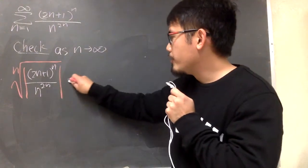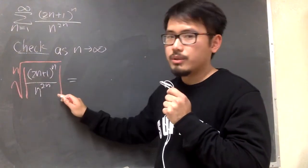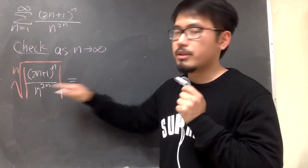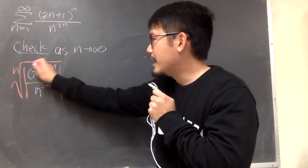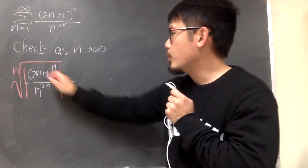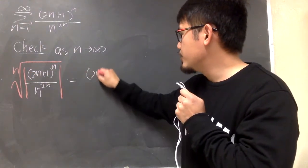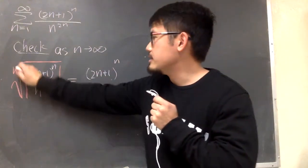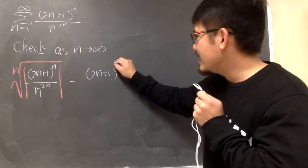And then, we know, when we take the nth root, it's the same as dividing the exponent by n. So, on the top, once again, I'm dropping the absolute value. We will just have parentheses 2n plus 1 to the nth power, but then for the nth root, we divide this exponent by n.